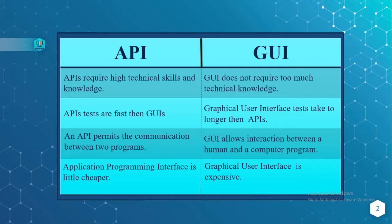An API permits the communication between two programs, whereas GUI, that is Graphical User Interface, allows the interaction between the human and a computer program.